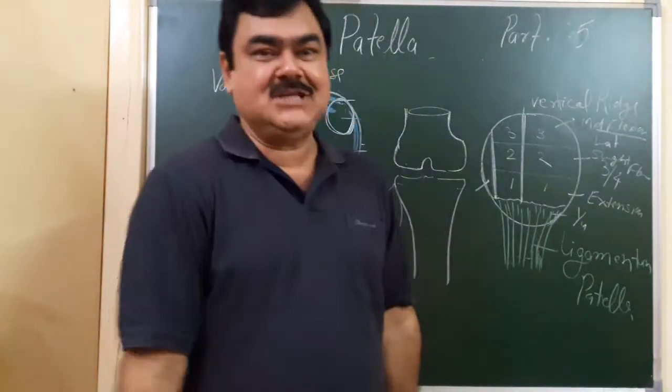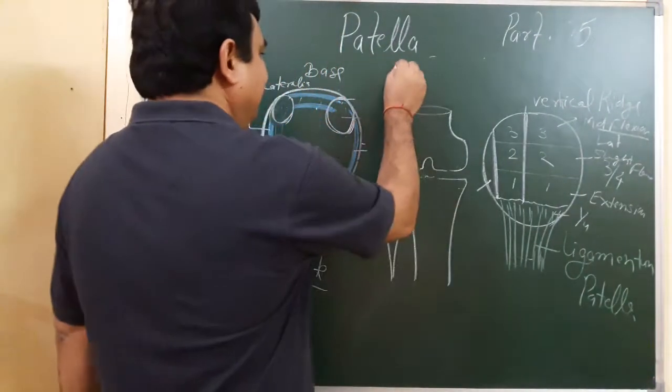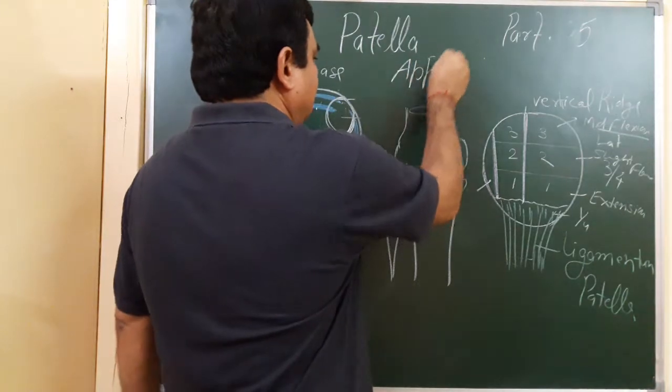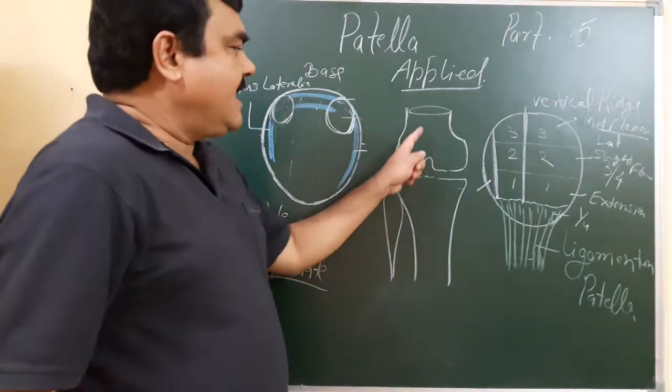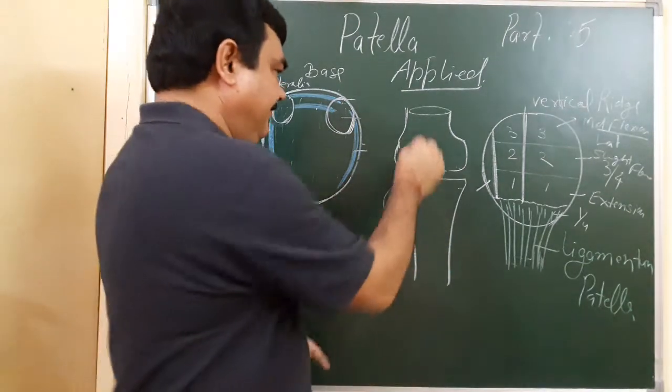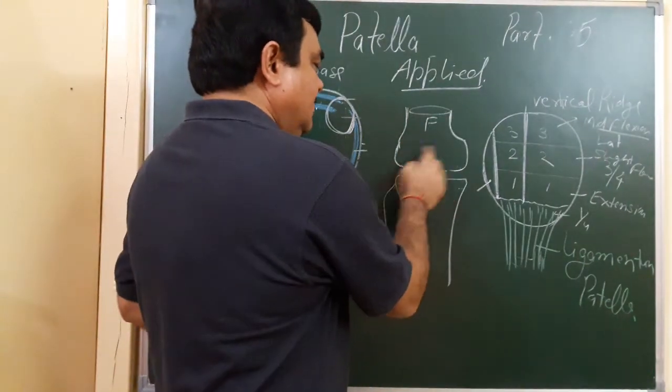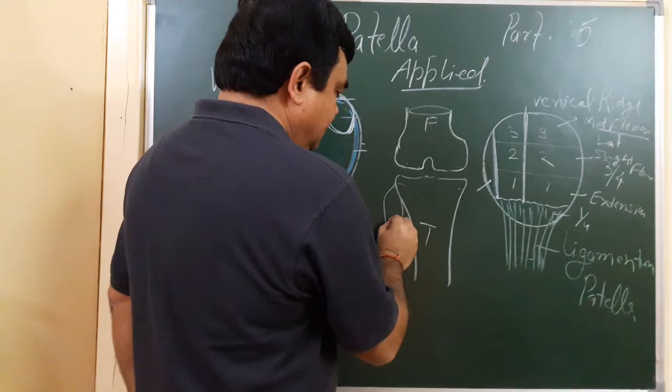Yes, now the applied aspect of the patella. In this diagram, this is the femur, this is the condyle of the femur, this is the tibia, this is the fibula.